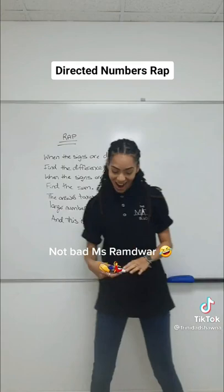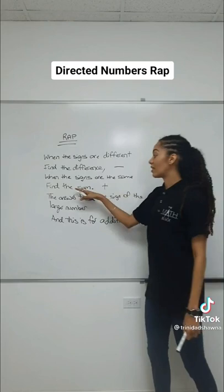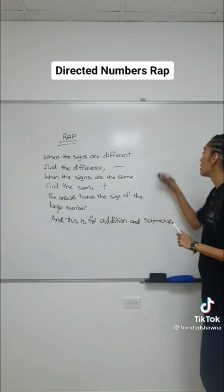Alright, so let's see what that means. When the signs are different, we find the difference. And what does the difference mean? It means to subtract. When the signs are the same, we find the sum — reminding you that the sum means to add. The answer takes the sign of the larger number, and this is for addition and subtraction. So let's test that theory, because it's only for addition and subtraction.